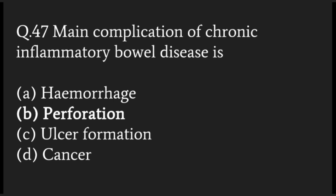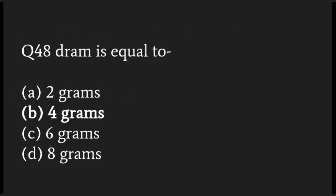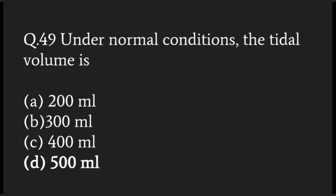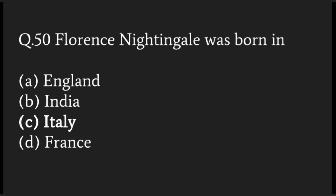The main complication of chronic inflammatory bowel disease is perforation. One dram is equal to 4 grams. Under normal conditions the tidal volume is 500 ml for an adult.